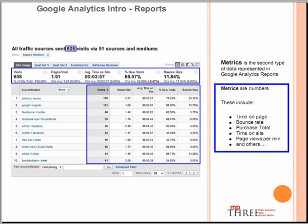Metrics is the second type of data represented in Google Analytics reports. Metrics are numbers. These include time on page, bounce rate, purchase total, time on site, page views per minute, and others.